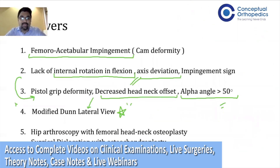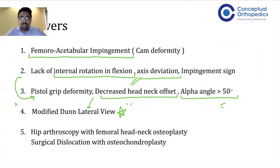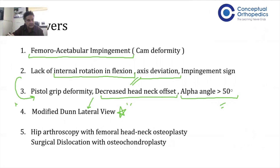Moving to the fourth question: if the patient fails conservative management, the treatment will be hip arthroscopy and femoral head-neck osteoplasty. In cases with severe FAI involving the circumferential portion of the head, you may also consider surgical dislocation and osteochondroplasty. This topic featured in the theory exam of the December DNB — femoral acetabular impingement syndrome — so there can be a correlation in the practical exams as well.